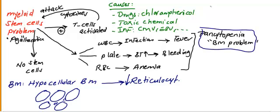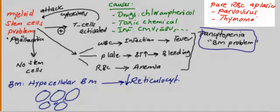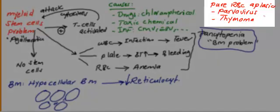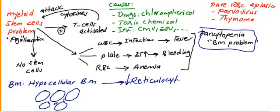There is a subcategory of aplastic anemia called pure red blood cell aplasia. This is usually seen in two associations. In pure red blood cell aplasia, white blood cell and platelet counts are normal, but there is a problem only with red blood cells. You should put in your mind two possible causes: either parvovirus or thymoma. When you see this in a test — pure red blood cell aplasia with normal platelets and white blood cells — the cause is either parvovirus or thymoma.